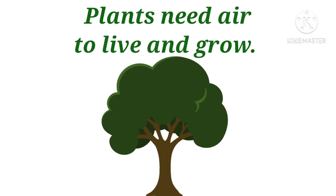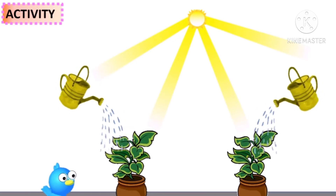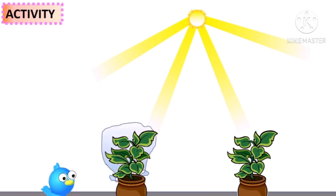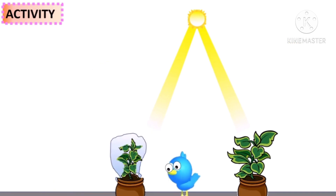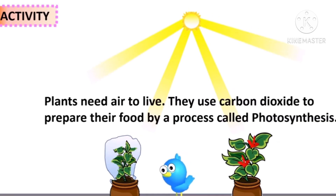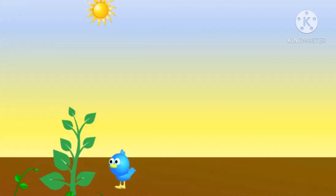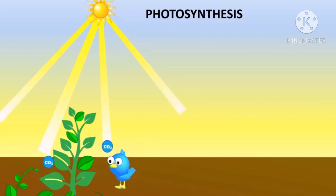Children, plants also require air to live and grow. Plants ko bhi jeene ke liye, apni growth ke liye air chahiye. We will take two potted plants, give both water, and keep both in sunlight, but cover one with a thin transparent plastic sheet. We will observe both after some days and find that the plant covered with the plastic sheet will shrink and dry out, while the other plant remains healthy. Yeh isliye hua kyunki plants ko carbon dioxide chahiye, which is one of the raw materials needed for photosynthesis, and they carry out this process in the presence of sunlight.